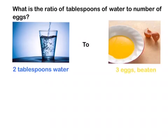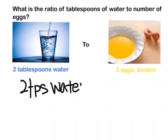What is the ratio of tablespoons of water to number of eggs? So, okay, 2 tablespoons of water. Yeah, so this thing is like that, you know? And then there's 3 eggs.